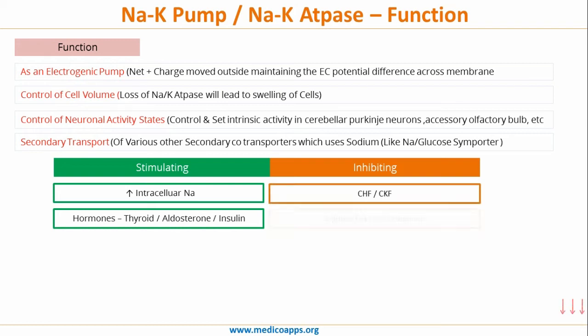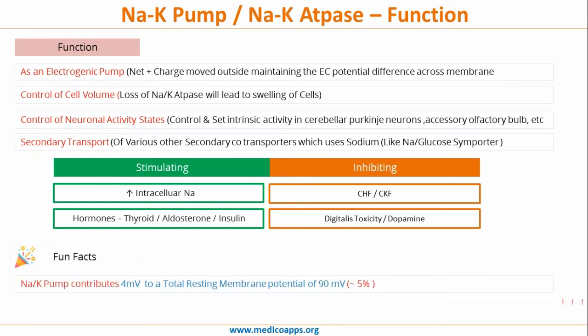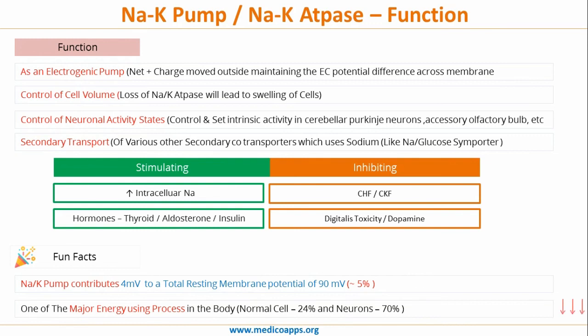Before we finish, here are two fun facts about the sodium potassium pump. First, the sodium potassium pump contributes only 4 millivolts to the total resting membrane potential of 90 millivolts, which is just about 5% of the total resting membrane potential. Second, the sodium potassium pump is one of the major energy-consuming processes in the body — in a normal cell, around 24% of energy is used to run this pump, and in neurons, as high as 70% of energy is used to run it.